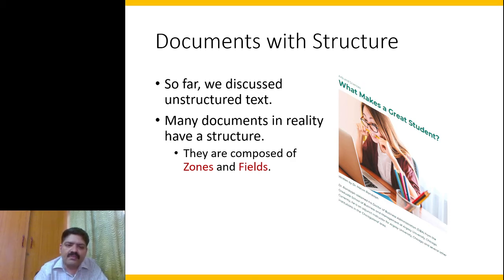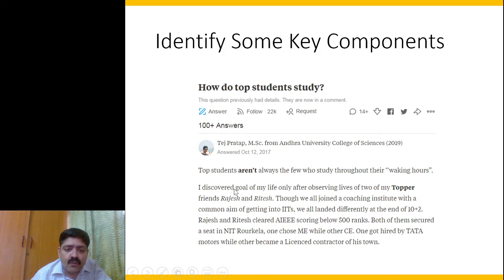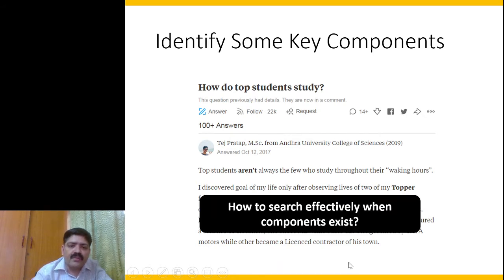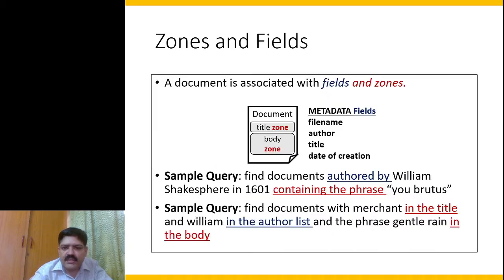We classify these as zones and fields. Here is a screenshot from Quora where someone has asked a question and there are 100 plus answers, with one answer contributed from one person. If you look at this content, it has structure — there is a question, there is an answer, there could be comments, and so on. The question is: how to search effectively, leveraging this structure.